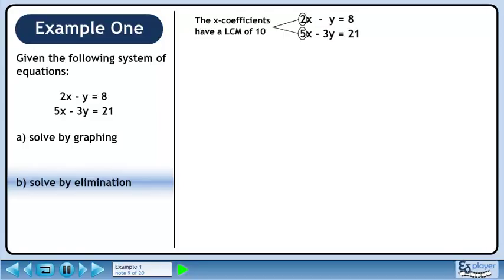Observe that the x coefficients in each equation are 2 and 5. If we can convert each of these coefficients to the lowest common multiple, which is 10, then we can get the x terms to vanish.